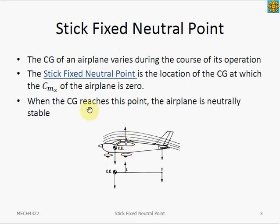By definition, the stick fixed neutral point is the location of the center of gravity at which our stability derivative CM alpha is 0.